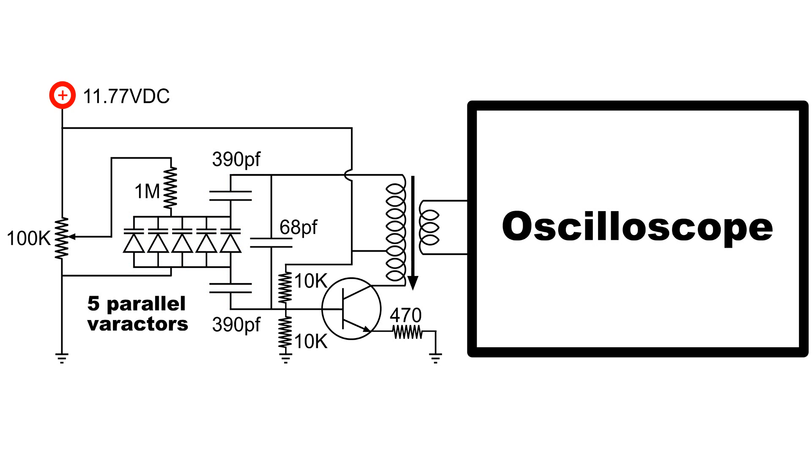I have hooked up the oscilloscope to the secondary of the oscillator coil and when I increase the voltage applied to the five parallel varactors we'll see that the frequency will increase, which means that the capacitance of the varactors are decreasing.